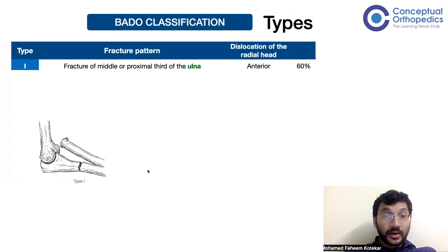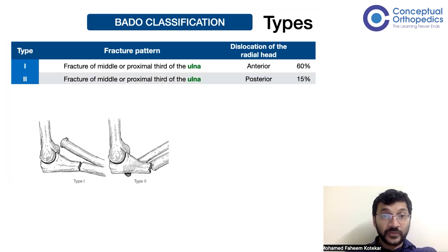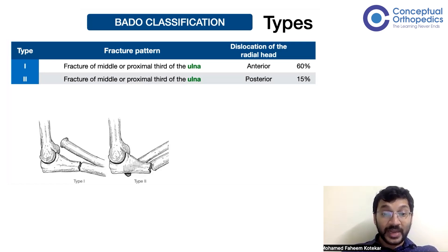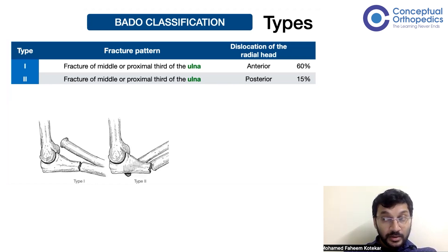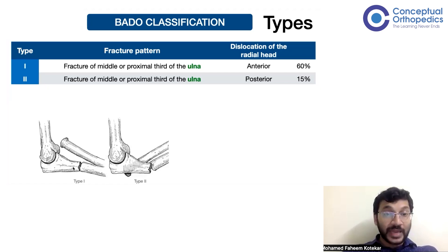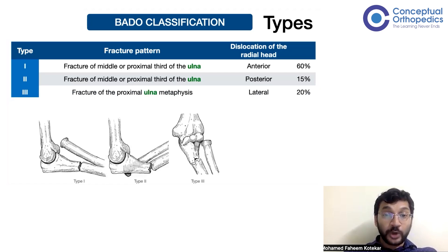Type 2 is again a fracture of the middle or proximal third of the ulna, but the dislocation of the radial head is posterior. This is less common in the pediatric age group, but in the adult age group it is the more common variety and is associated with a dislocation of the elbow as well.